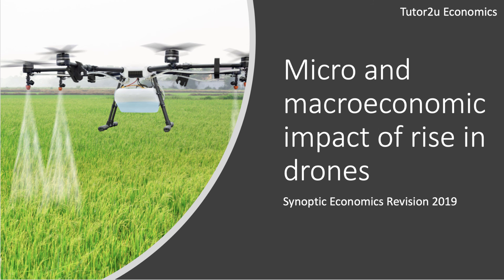Hopefully you can see that drones is not an obvious example to choose, but drone use has both micro and macro impacts — and that's really the key in synoptic papers: to think synoptically and not in silos. Micro, macro, micro, macro — a lot of students find that difficult. Hopefully these short videos are giving you some examples of how you can think synoptically ahead of your exam. Thank you.